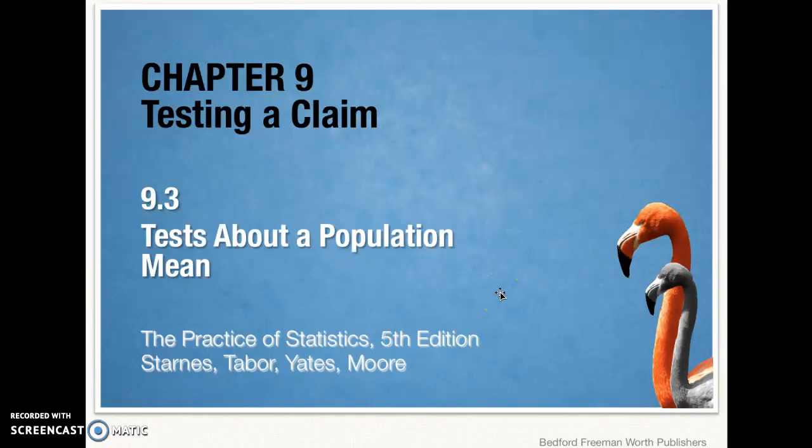Hello, students. This is Muskokan. We're back in Chapter 9 for the final section of our chapter about significance testing, and this time we're talking about testing about a population mean.